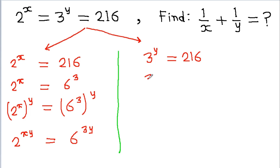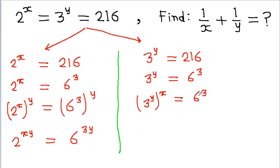From the second equation, 3 to the power y is equal to 6 cubed. Here if we raise both sides to the power x, then it will become 3 to the power y to the power x is equal to 6 cubed to the power x, or it will become 3 to the power xy is equal to 6 to the power 3x.